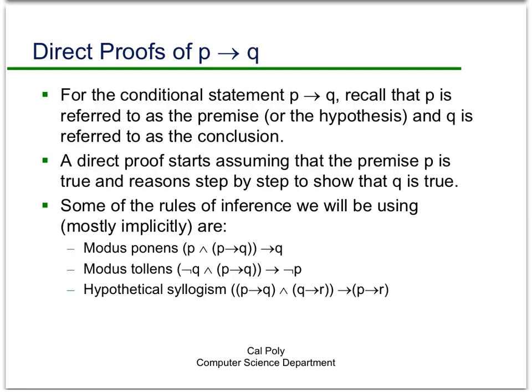So this slide basically just reiterates what I just said about the conditional statement. We're largely going to be proving things like p implies q and we're going to be using what are called direct proofs. And all a direct proof is, is it starts by assuming that the premise p is true and goes step by step to show that the conclusion q is true. Now when we're doing this again, we'll be justifying the steps largely by axioms and definitions from the domain in which we're working.